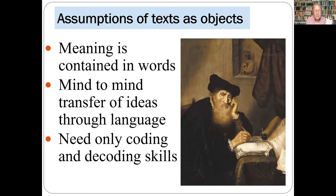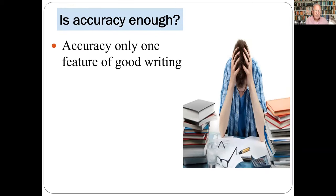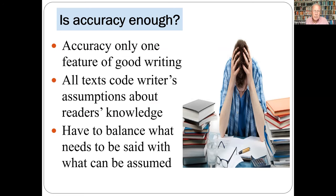This doesn't make sense, of course, because accuracy is only one feature of good writing and on its own it doesn't make communication. This is how lawyers make their money — they dispute and pick apart the most detailed written contracts. There's always more than one interpretation. Our goal as writing teachers can never be just training students in accuracy, because all texts include what writers assume readers will know and how they're going to use the text. The writer's problem is to make it explicit enough for particular readers, balancing what needs to be said against what can be assumed.